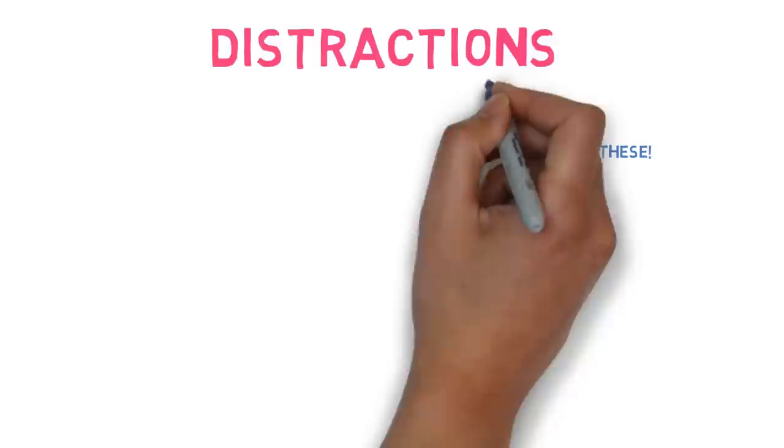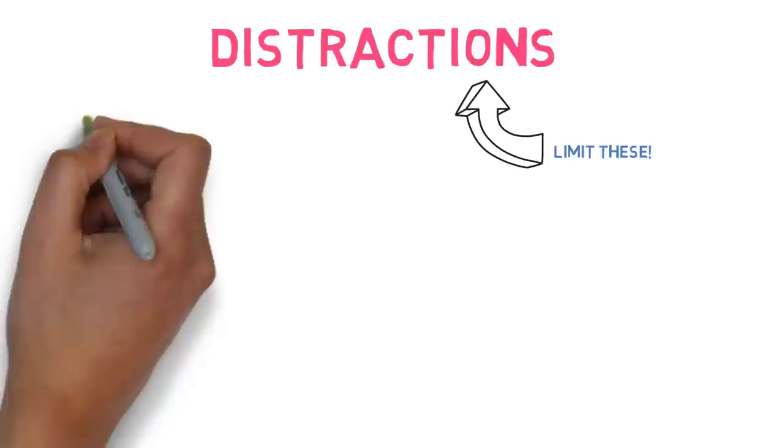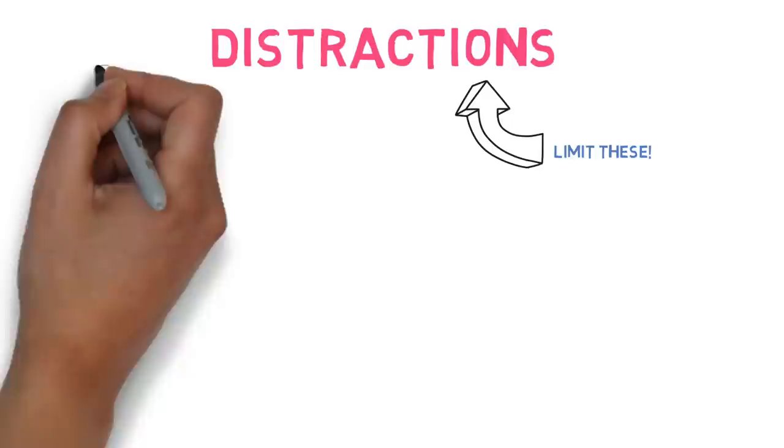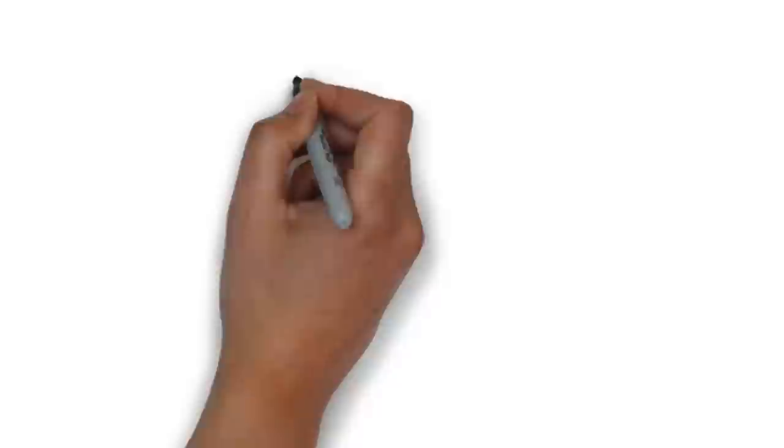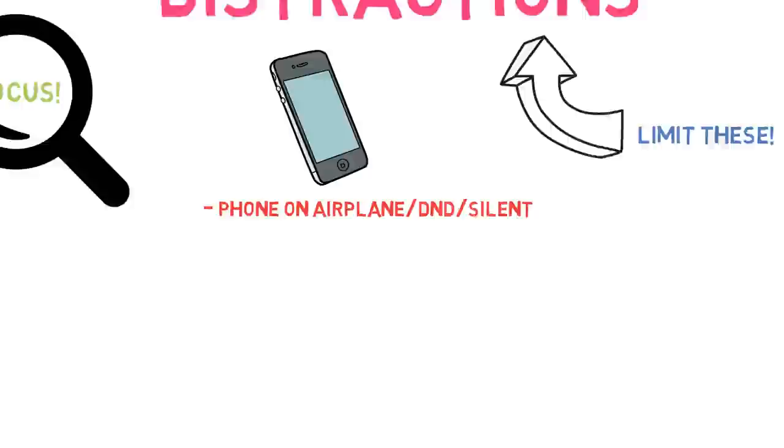Distractions. During your Pomodoro cycles, do your best to limit distractions. The whole point is 25 minutes of intense focus. Don't be checking Facebook or Reddit or the Med School Insider's website on and off. Focus on the task at hand. I personally put my phone on either airplane mode or do not disturb mode, but be careful because do not disturb mode can actually affect the notifications on your timer app if you are using your smartphone app.